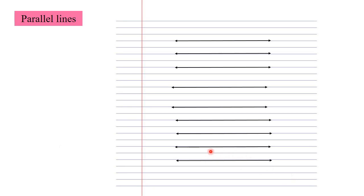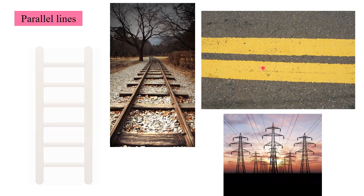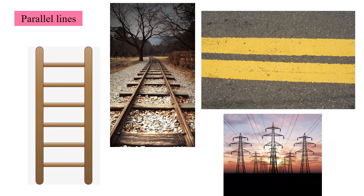Next, we have parallel lines. Look at this page from a notebook — it is part of a plane. If we extend the lines that run sideways on the page, will they meet each other? No, they will not. Therefore, such lines are called parallel lines. The lines which do not intersect are called parallel lines. They are equidistant from each other. We have many examples of parallel lines in our surroundings, like on the road.